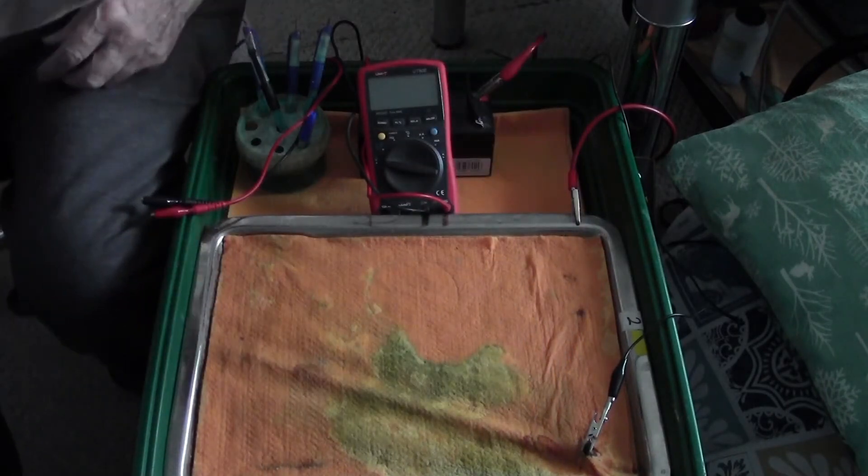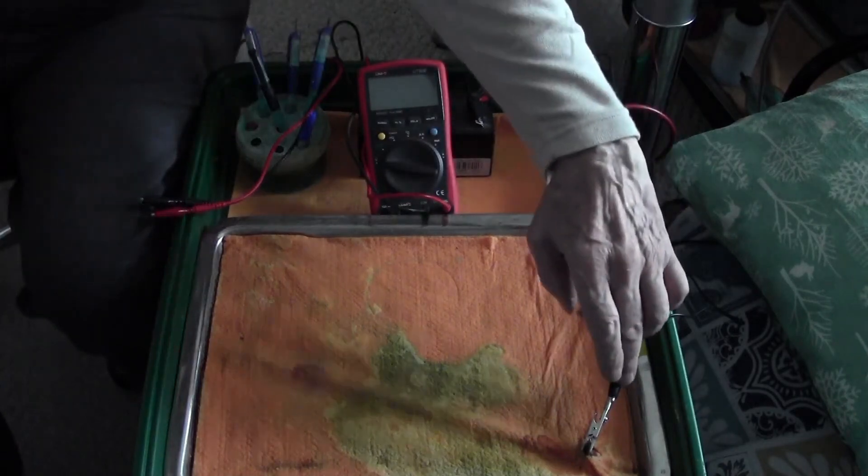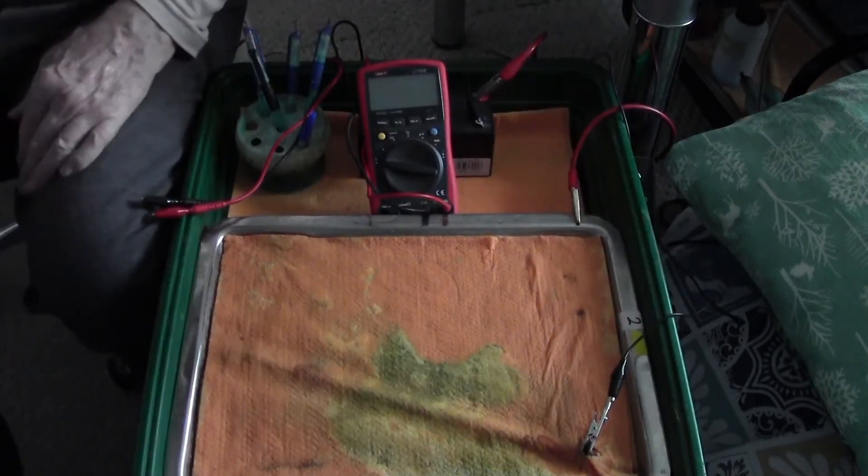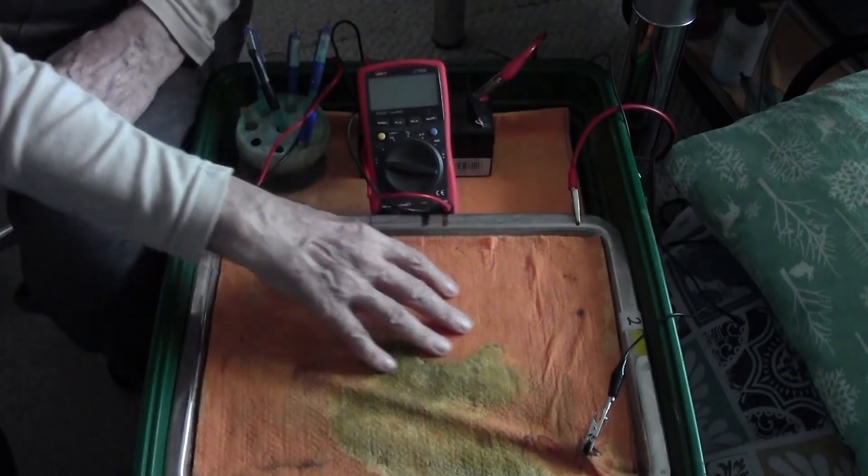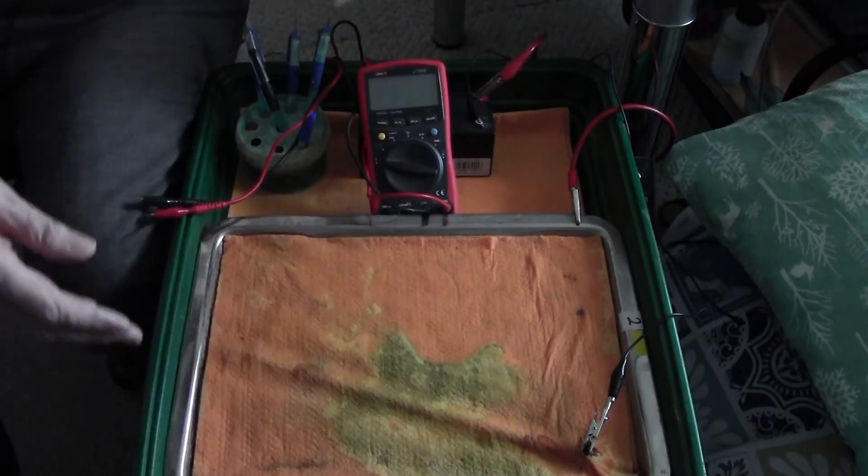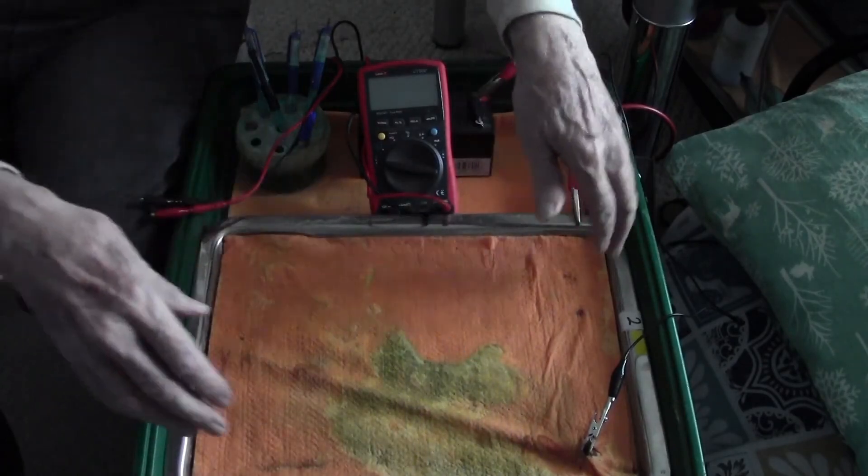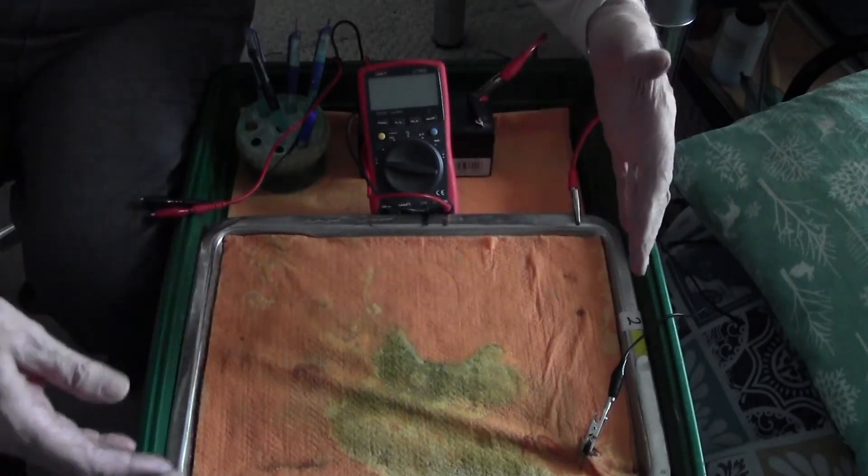put a 12 volt charge between here and here and that charge is going into the whole of the ground and it's connected to the stainless steel tray. It's a cooking tray that I use